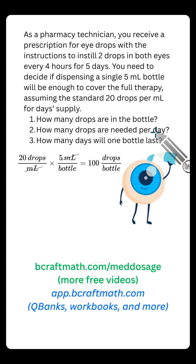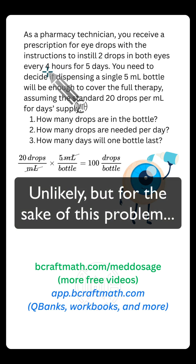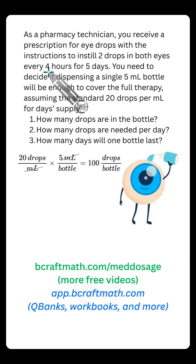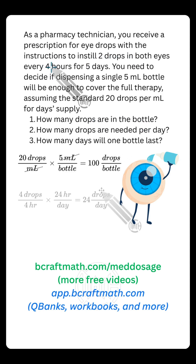How many drops are needed per day? The fast way first: the prescription is two drops in both eyes, so each time this person uses the eye drops, they use four drops. They do it every four hours, and assuming they're up all day and all night, that's six times per day because four hours goes into 24 hours six times. We don't use the five days yet because this question asks drops per day. Four drops times six times per day gives you 24 drops per day.